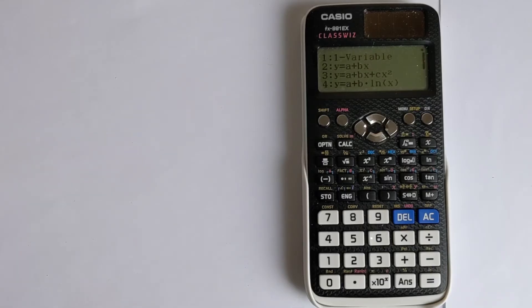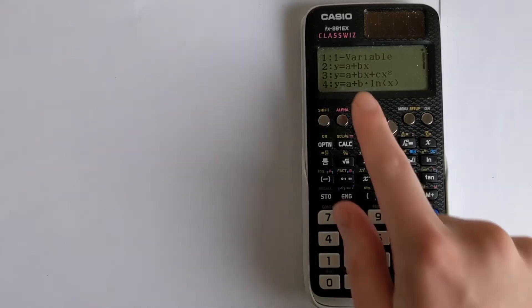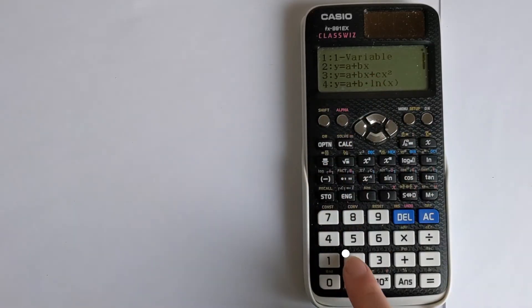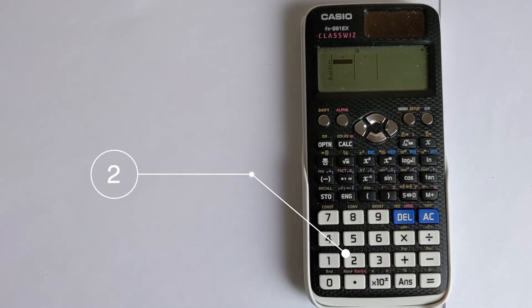Because we're doing linear interpolation, you want to be choosing the one that looks like the equation of a line. So we've got y equals a plus bx, looks like the equation of a line, so we press 2. We're now into the right mode.